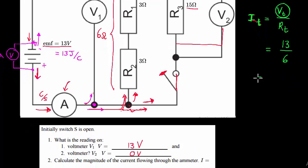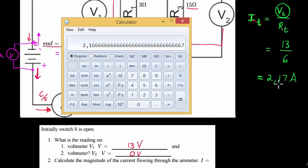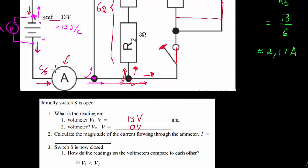13 divided by 6 gives 2.17 amperes. That means every second, 2.17 coulombs of charge pass through the ammeter.